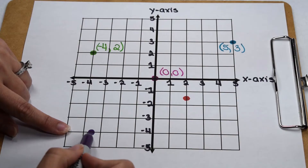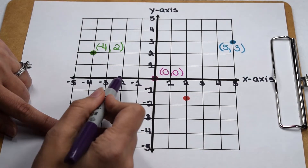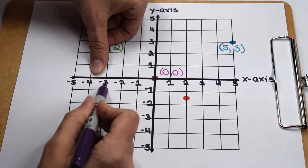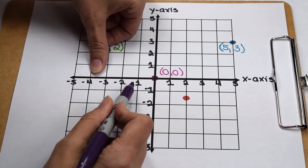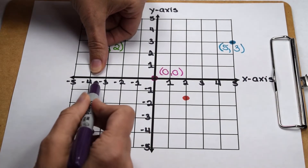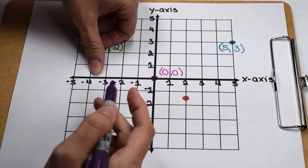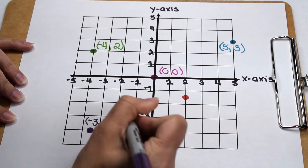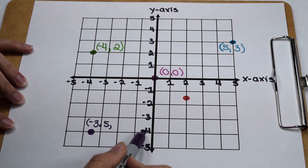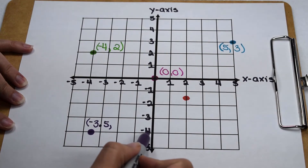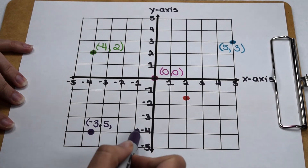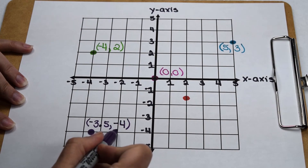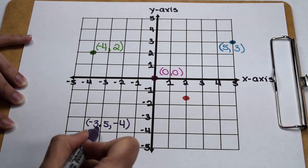Coming down to quadrant three, we start by checking its x value. We notice we're to the left of the origin, so our x value is going to be negative. Our point falls between negative 3 and negative 4. Since the scale on our x-axis is counting by ones and our point falls about halfway between negative 3 and negative 4, we can estimate its x value to be about negative 3.5. Checking its y value, we're below the origin so it's negative, and the point lines up with negative 4 on the y-axis. So this point is best represented by the ordered pair (negative 3.5, negative 4).